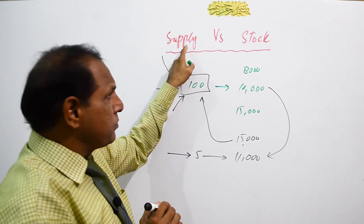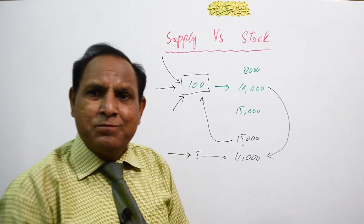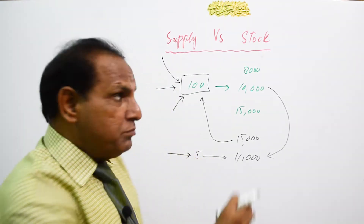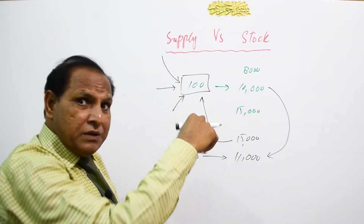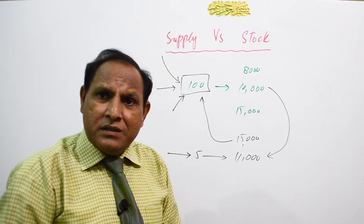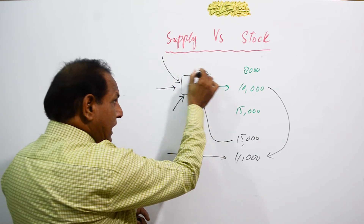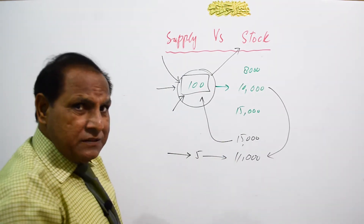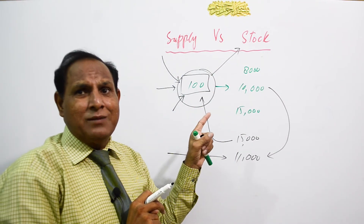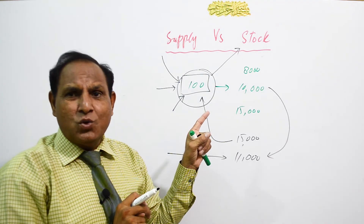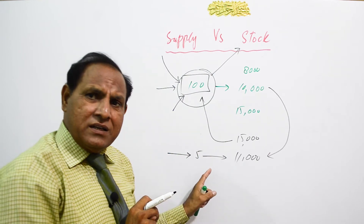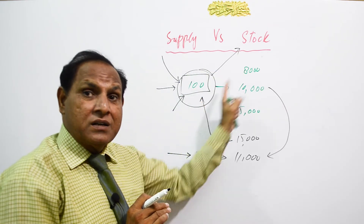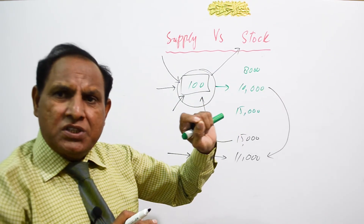So we may say that supply is a part of stock — supply may be equal to stock or it may be less than stock, but the quantity of supply can never exceed the quantity of stock. When I have 100 mobiles, this is my stock. The quantity of those 100 mobiles I am going to sell is known as supply. Suppose I would like to sell only 10 mobiles — those 10 mobiles are my supply and 100 is my stock.